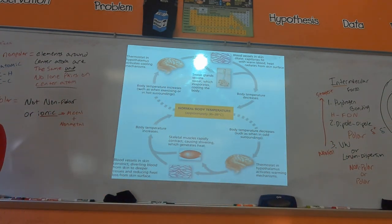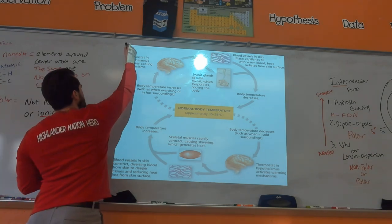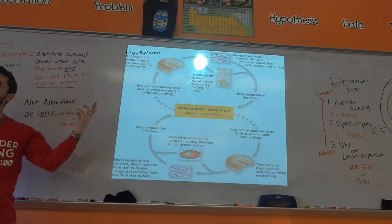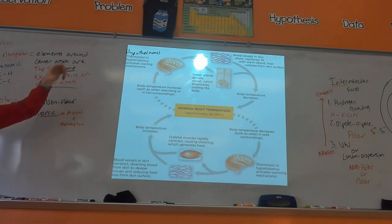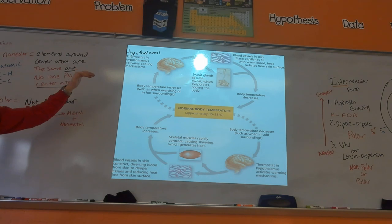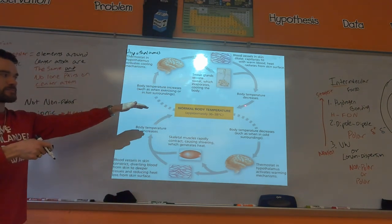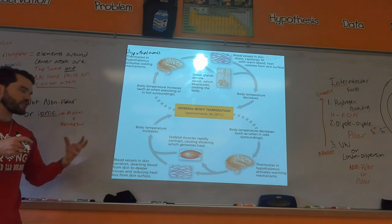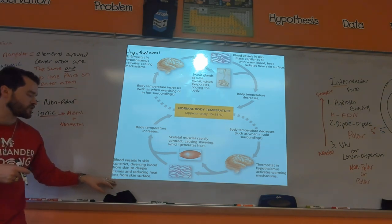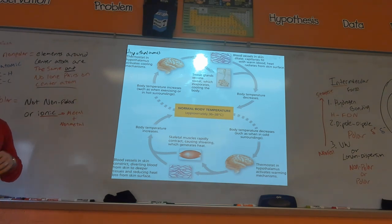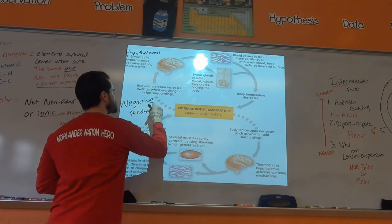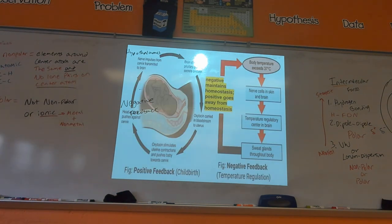For temperature homeostasis, cells in the hypothalamus sense body temperature via the blood. If it's too hot, the hypothalamus triggers vasodilation and sweating to release heat. If it's too cold, it triggers shivering and increased cellular respiration to generate heat. This is negative feedback, which is the main driver of homeostasis — the response counteracts the change to bring conditions back to the set point.